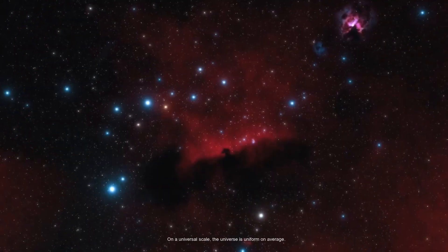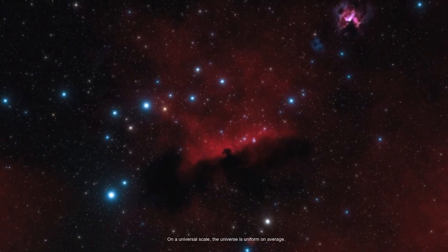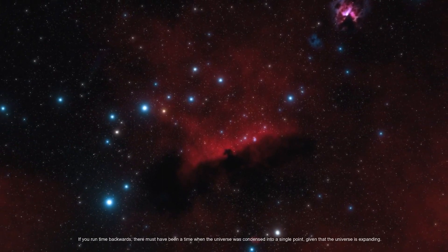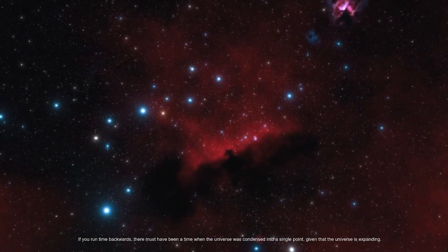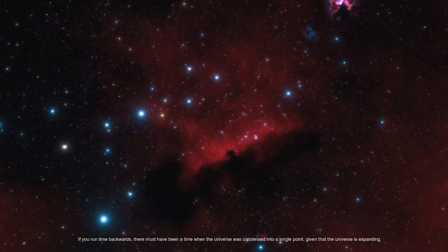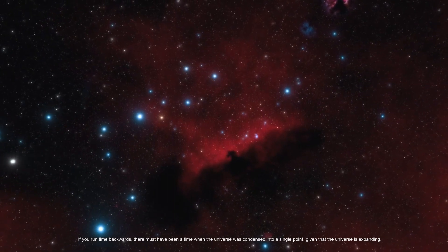On a universal scale, the universe is uniform on average. If you run time backwards, there must have been a time when the universe was condensed into a single point, given that the universe is expanding.